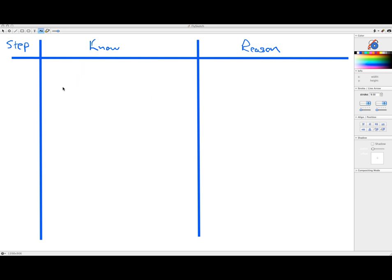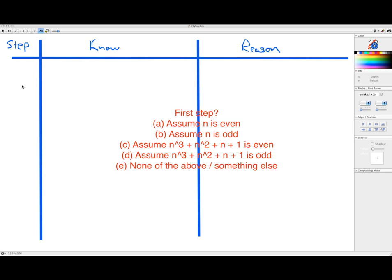So here is our blank know-show table, and we're going to try to prove this statement again. If n is even, then n cubed plus n squared plus n plus 1 is odd. So I'm going to give you a question here as a concept check. What is the first thing I should do in this proof here? Should I assume that n is even? Should I assume that n is odd? Should I assume that n cubed plus n squared plus n plus 1 is even? Should I assume that n cubed plus n squared plus n plus 1 is odd, or none of the above?